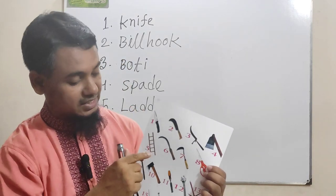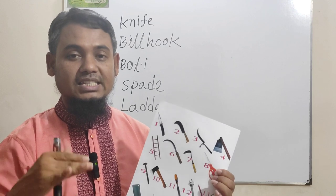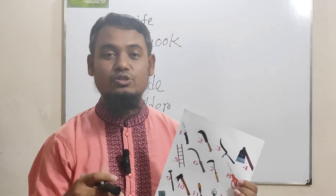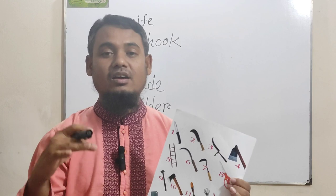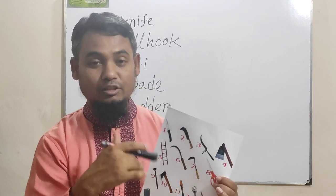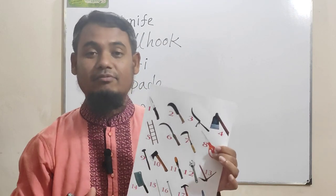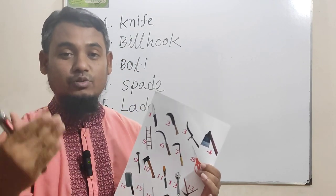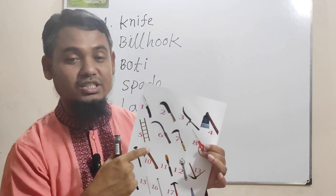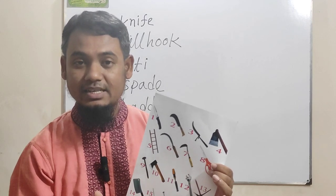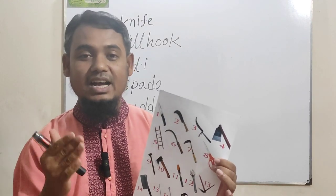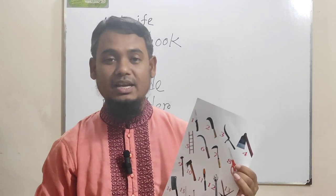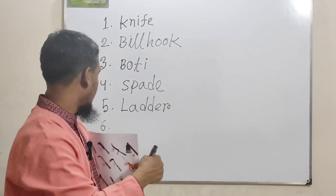Number six is sickle. Sickle is used to cut paddy, wheat, and different crops. It is especially used by farmers in rural areas to cut paddy and any other crops. This tool name is sickle, number six.